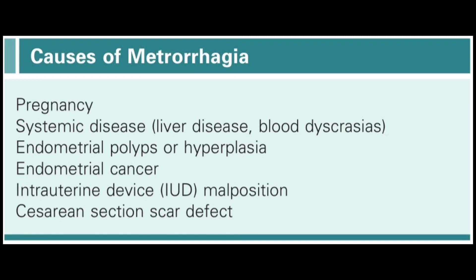To summarize: menorrhagia is when bleeding increases within the menstrual cycle duration, while metrorrhagia is bleeding that occurs outside the menstrual cycle. Causes of metrorrhagia include intrauterine or ectopic pregnancy, systemic diseases such as liver disease or blood abnormalities, endometrial polyps or hyperplasia, and importantly, endometrial cancer — which is one of the major indications for metrorrhagia.